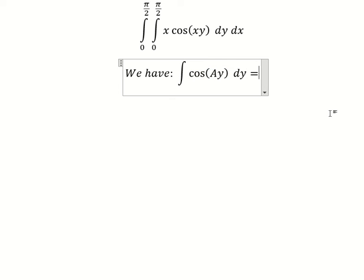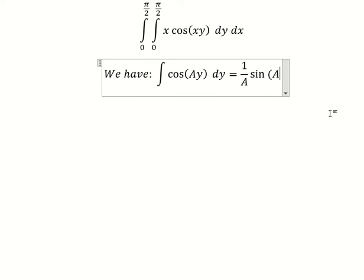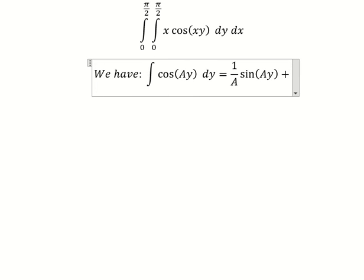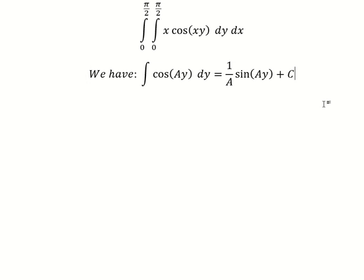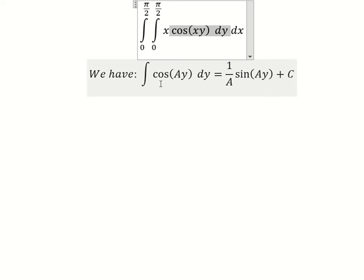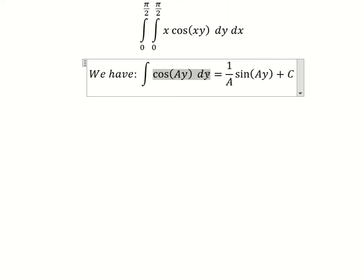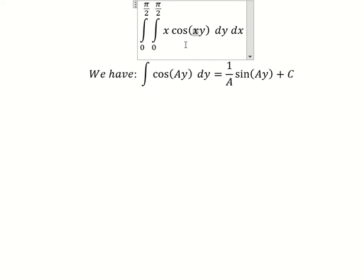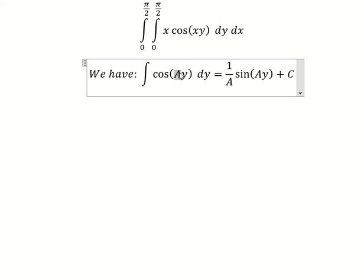The integral of this one, we have one over A times sine of Ay, and I will put plus C. Let's say we just have only this one, and similar for this one here. So because this is about dy, A is just like a capital A.